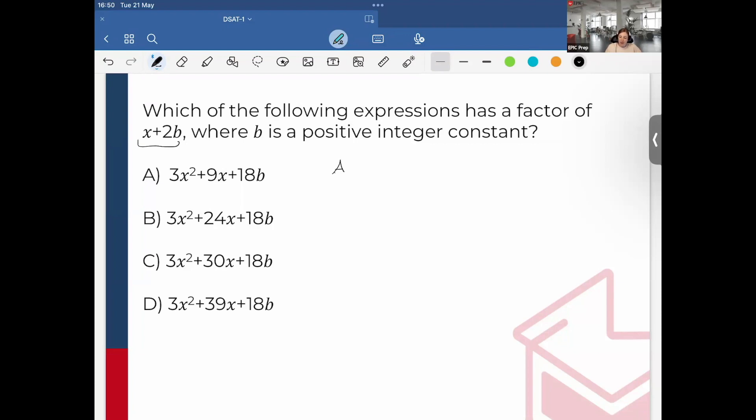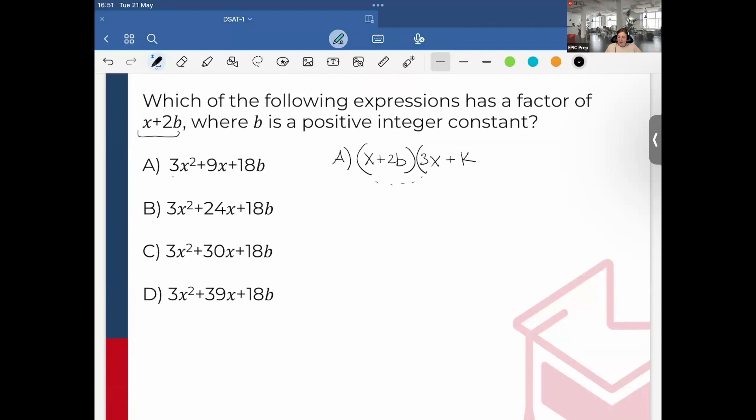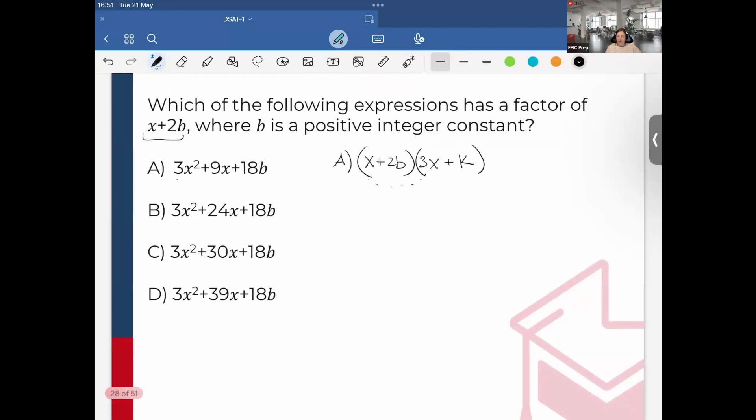For example, let's just check A. If I have x + 2b, then this must be 3x because I want this, when I multiply, to become 3x². And then plus some constant k. When I expand, I would get 3x² + kx + 6bx + 2bk.